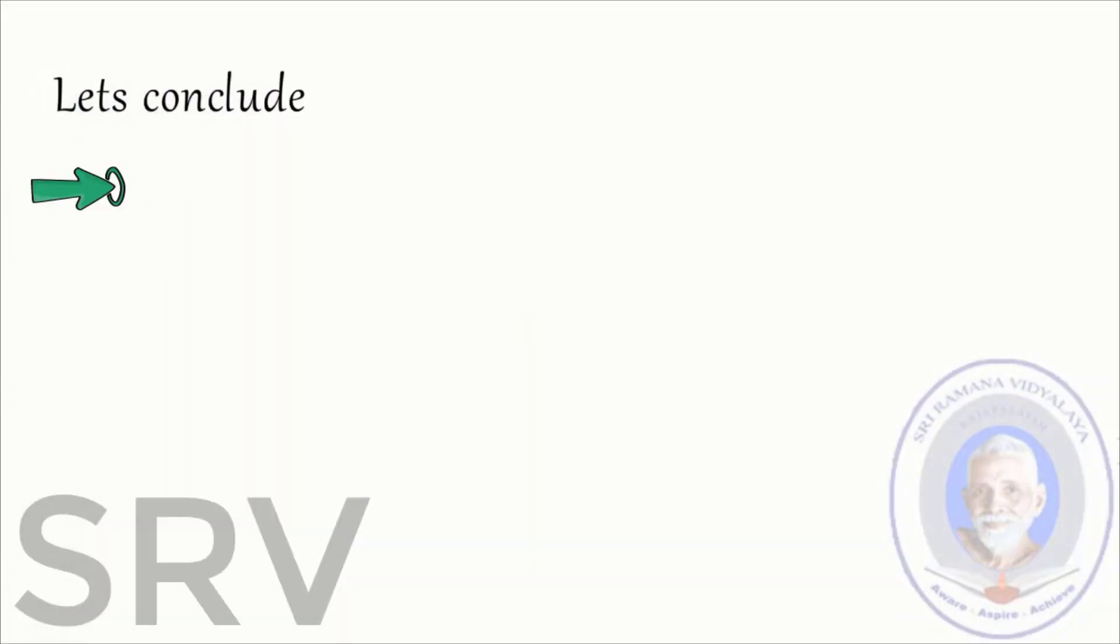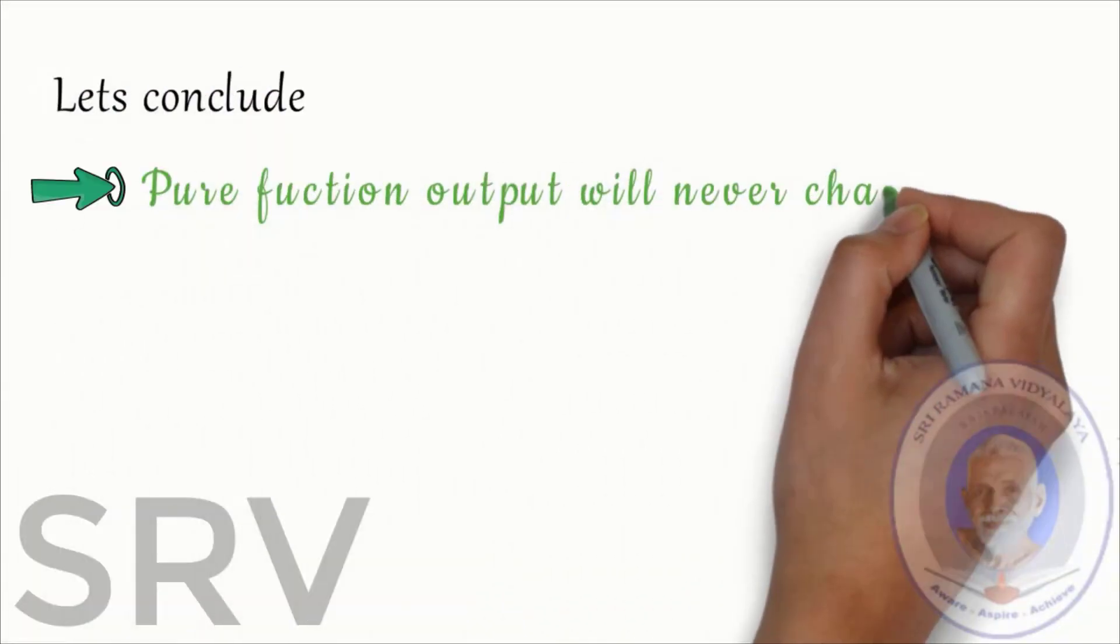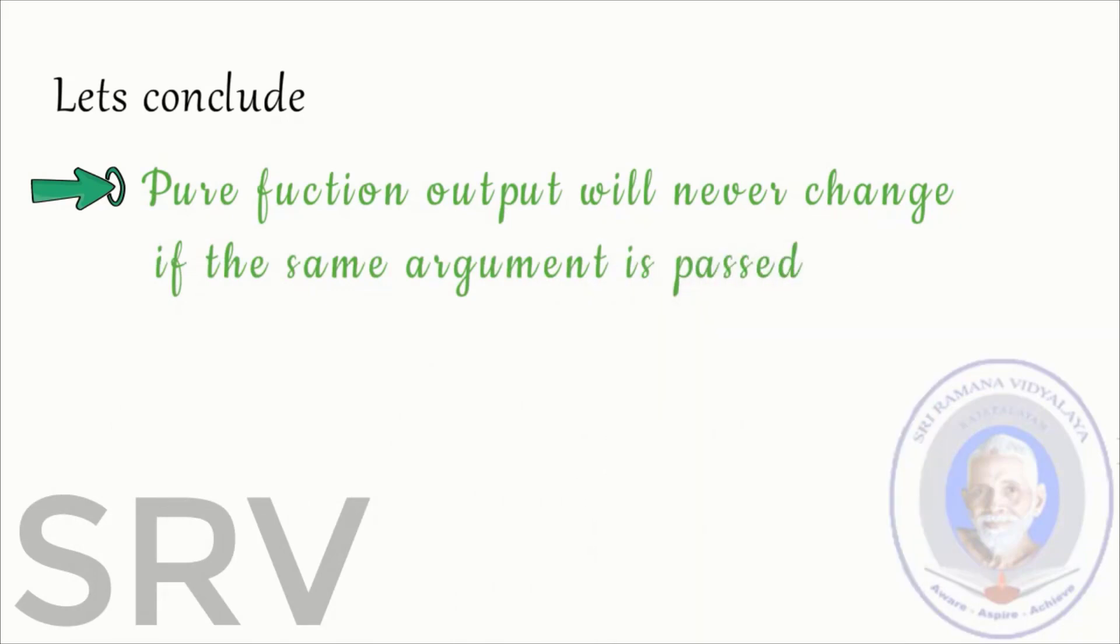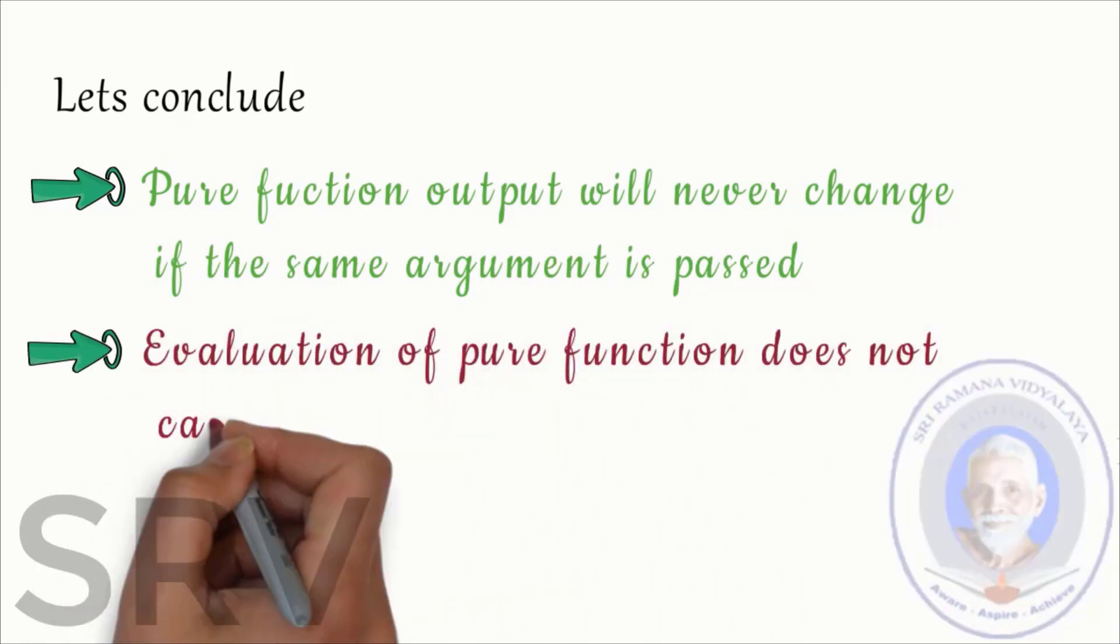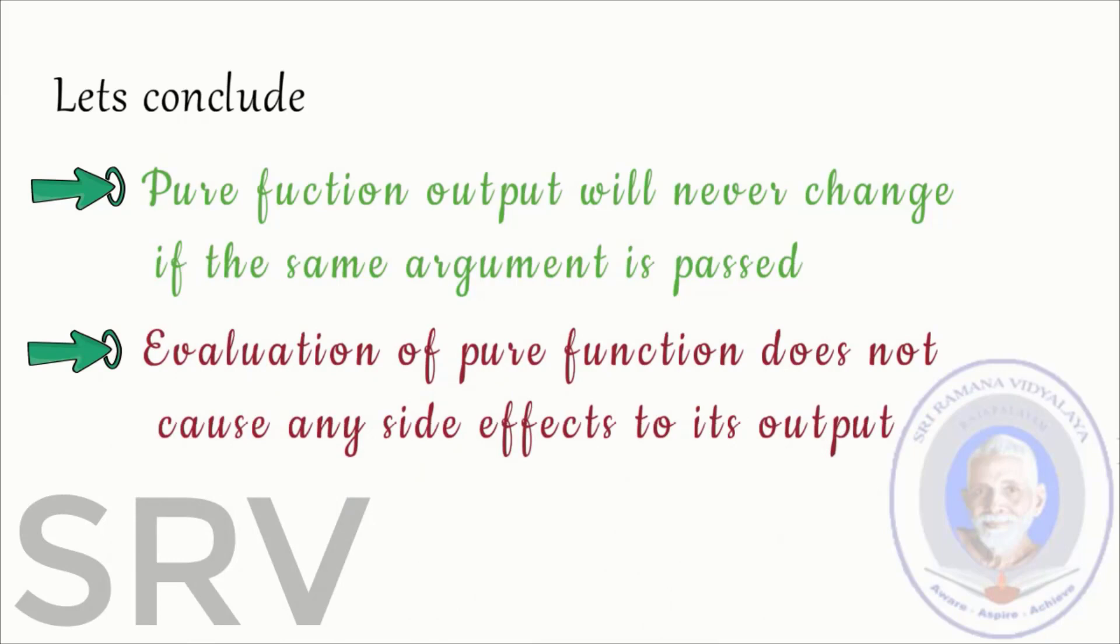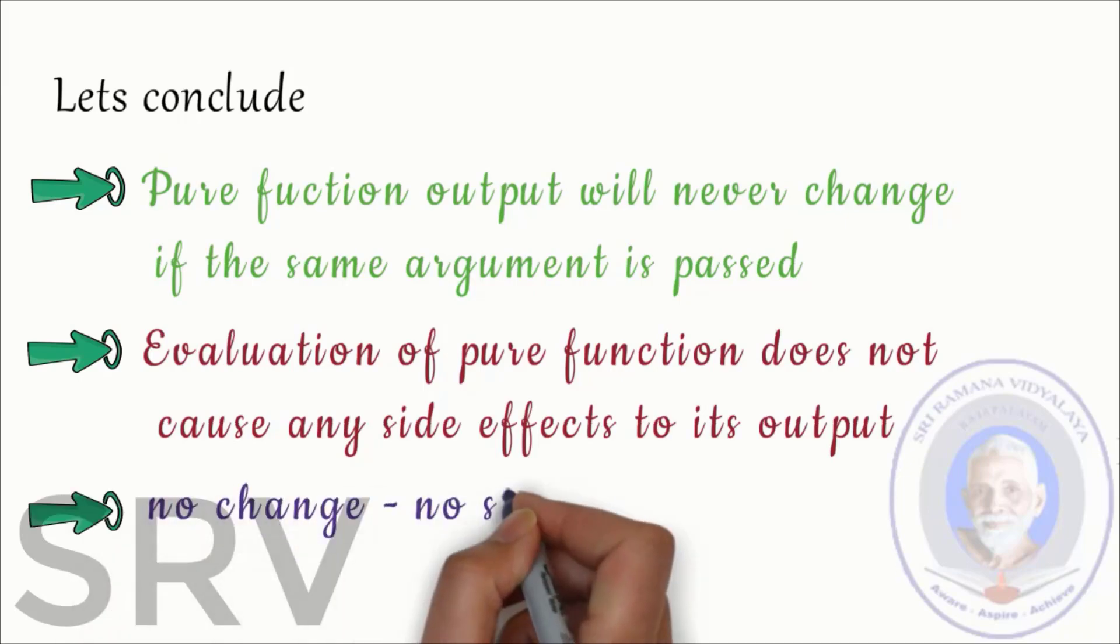Let's conclude. Pure functions output will never change if the same argument is passed. Evaluation of pure function does not cause any side effect to its output. As no changes are made in the function so no side effect will occur. So, no change no side effects. So, these are the main concepts of pure functions.